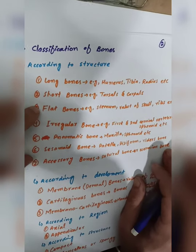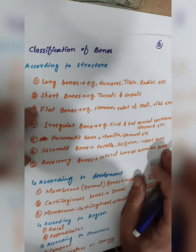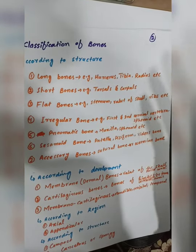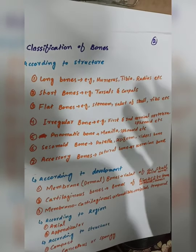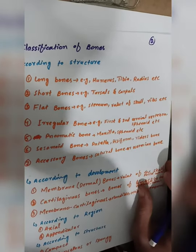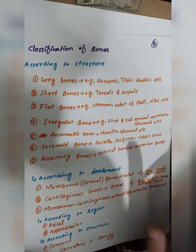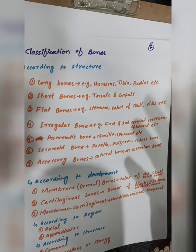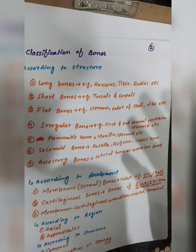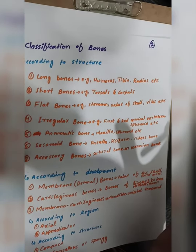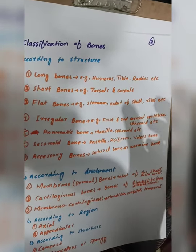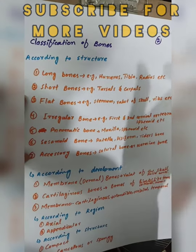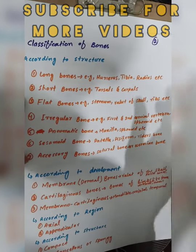Flat bones are flat and provide support and protection. Examples of flat bones include the sternum, the vault of the skull, and the ribs. Flat bones are used for protection of underlying organs.